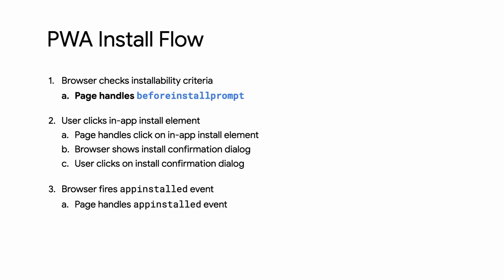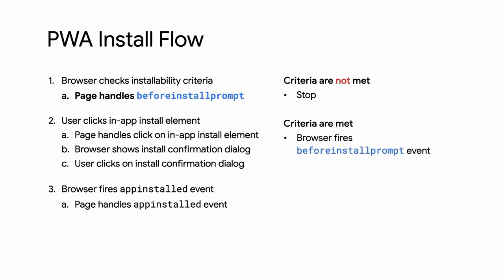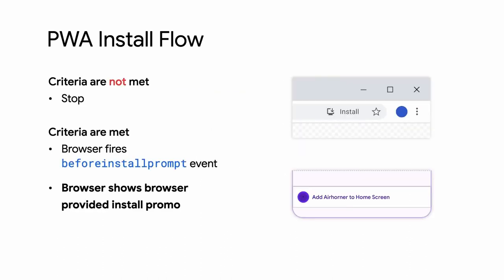If the criteria aren't met, the PWA isn't installable and the process stops here. But if the criteria are met, the browser fires the beforeinstallprompt event, then shows the browser-provided install promotion. On mobile, that's the mini info bar. And on desktop, it's the install chip that's shown in the address bar.